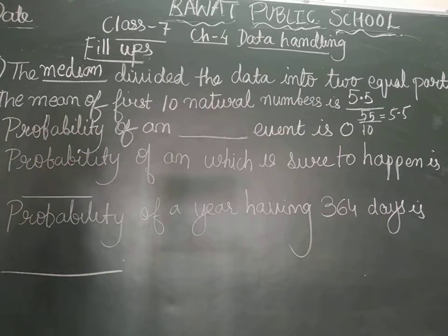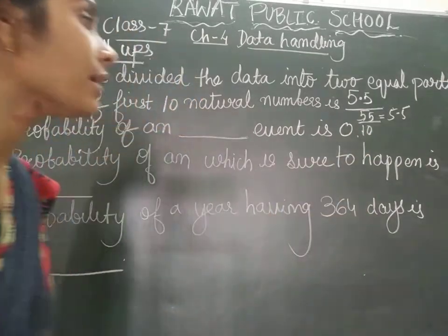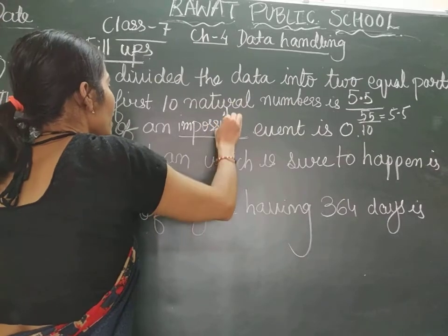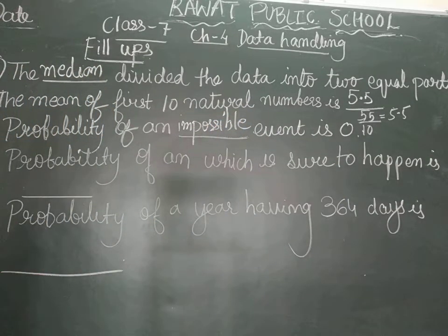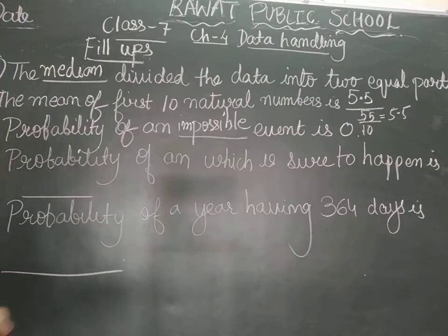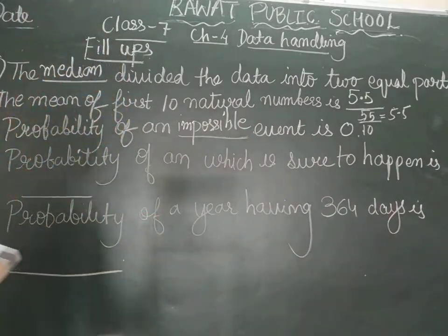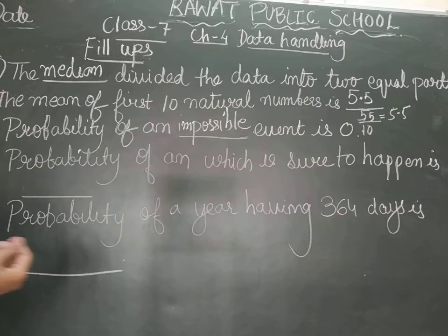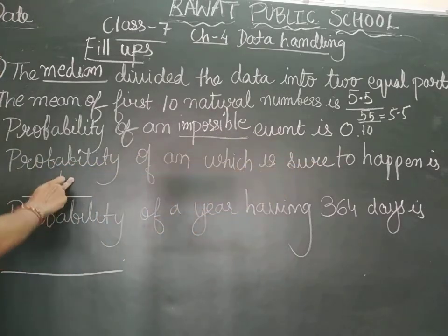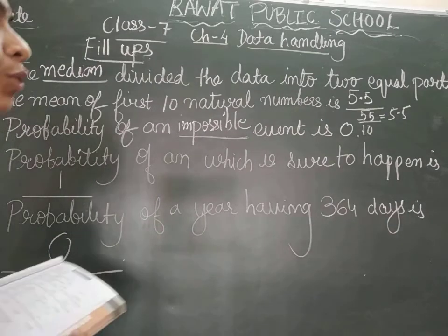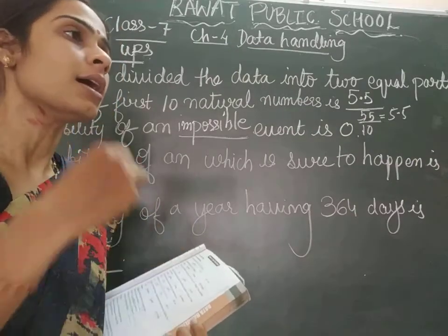The probability of a blank event is 0 — that is the event which is impossible to happen; it will never happen. Now, if we are talking about any event which is sure to happen, we can take the example of the rising of the sun in the east, rotation of the earth, or revolution of the earth — the probability of these sure events is 1. The probability of a year having 364 days is 0, because a year could have 365 days or 366 days in a leap year.